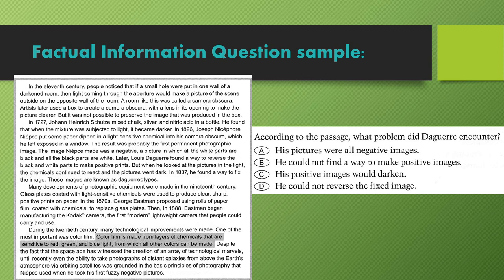Choice D is incorrect because it says that he found a way to reverse the black and white parts to make positive prints, so it is contradicting one of the choices. That leaves Choice C, which is supported by the eighth line from the second paragraph. Therefore, C is the correct answer.